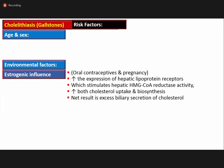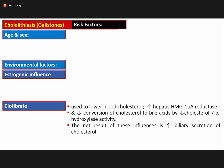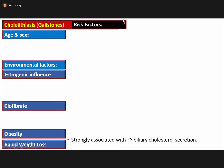Estrogenic influence results in increased expression of hepatic lipoprotein receptors, stimulating hepatic HMG-CoA reductase activity and increasing both cholesterol uptake and biosynthesis. The net result is excessive biliary secretion of cholesterol leading to stone formation. Clofibrate, an agent used to lower blood cholesterol, increases hepatic HMG-CoA reductase and decreases conversion of cholesterol to bile acids by decreasing cholesterol 7-alpha-hydroxylase activity, resulting in increased biliary cholesterol secretion that predisposes to cholelithiasis. Obesity and rapid weight loss are also strongly associated with increased biliary cholesterol secretion.